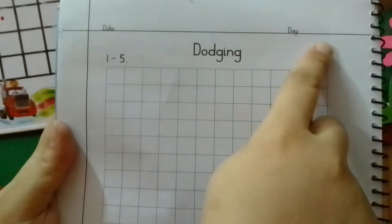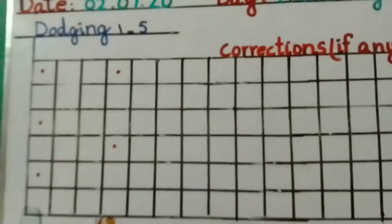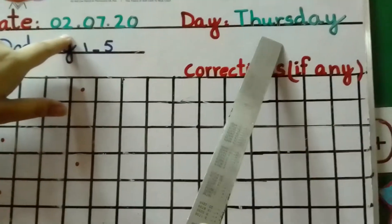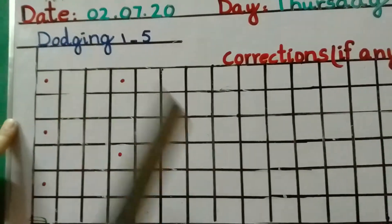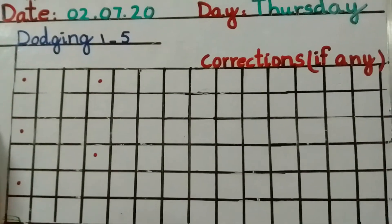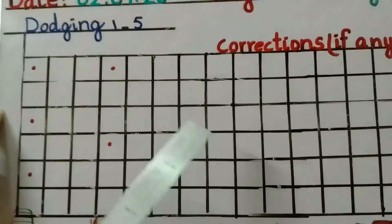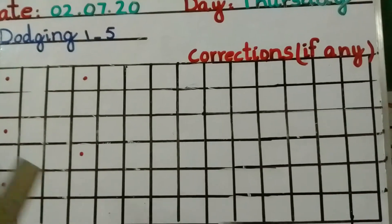Today we will do page number 24. Ask your mama to write down the date and the day on the top line. Now children, I am going to take your test. Here is the date, here is the day, and here is written 'dodging.' Dodging means dictation of numbers — just like the test you did last week of letters A to F. When we take the dictation of numbers, we call it dodging.